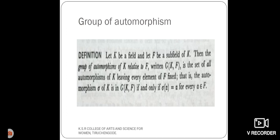Leaving every element of F which is fixed. That is, the automorphism sigma of K is in the group of automorphisms G(K,F) if and only if sigma of alpha is equal to alpha, where alpha belongs to the field F.